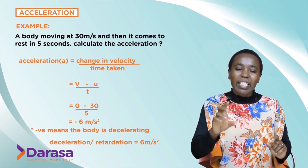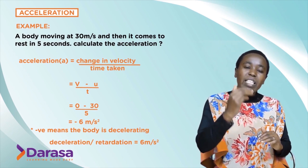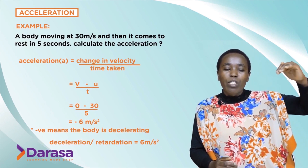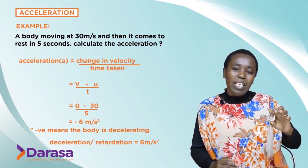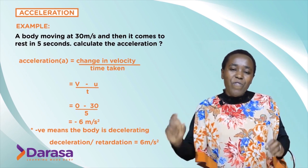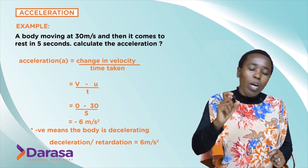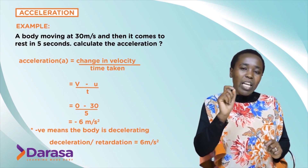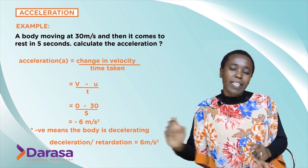Deceleration or retardation occurs when a body moves from a higher velocity to a lower velocity or to rest, and the acceleration gives a negative figure. That negative means it is a retardation. When asked for the retardation, we exclude the negative and state it as 6 meters per square second.